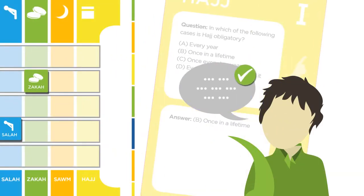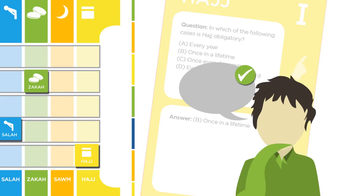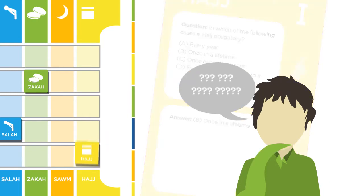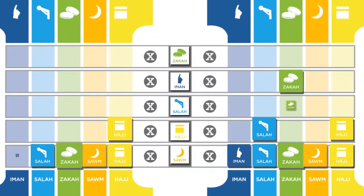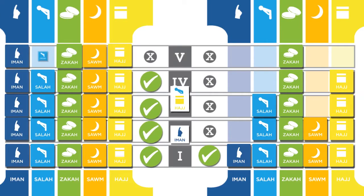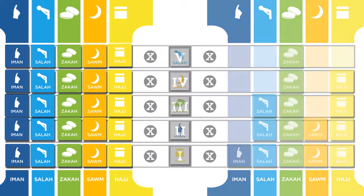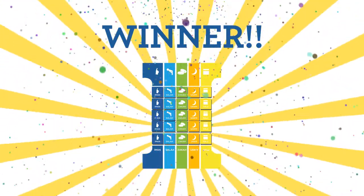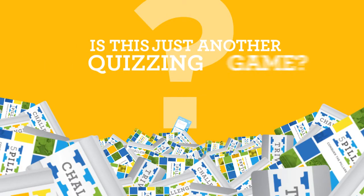Correct answers earn your team points and pillar tiles, but be careful as incorrect answers can cost your team. The first team to correctly answer a question for each pillar at each difficulty level is the winner and has conquered the Pillars of Islam. Is this just another quizzing game?